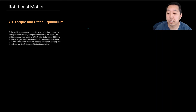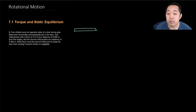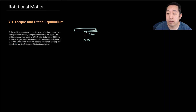Both push horizontally and perpendicular to the door. One child pushes with a force of 17.5 newtons at a distance of 0.6 meters. We have a door like this — I'll make it horizontal, viewed from above, swinging this way. One child is pushing with 17.5 newtons at 0.6 meters, and the second child pushes at a distance of 0.45 meters.